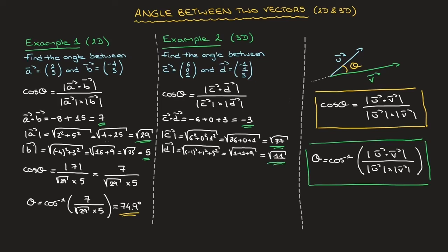Going back to the formula and replacing the dot product and the two magnitudes with the values we've just found, we can state that the cosine of theta equals the absolute value of negative 3 over the square root of 37 times the square root of 11. Since the absolute value of negative 3 is 3, this equals 3 over the square root of 37 times the square root of 11.